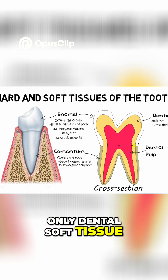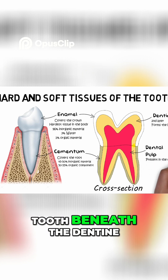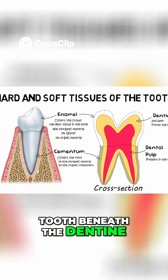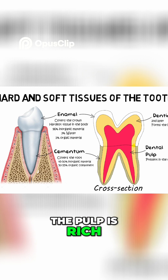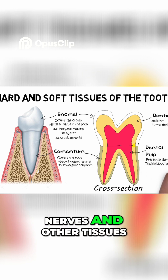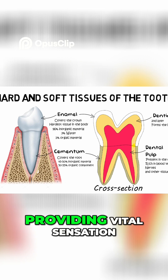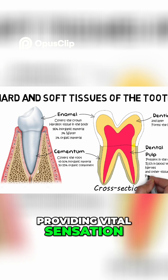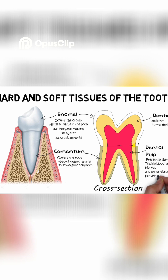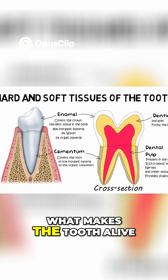Dental pulp is the only dental soft tissue and is found in the core of the tooth, beneath the dentine. The pulp is rich in blood vessels, nerves, and other tissues, and is responsible for the health of the tooth, providing vital sensation. The pulp is essentially what makes the tooth alive.